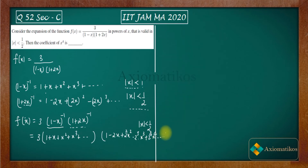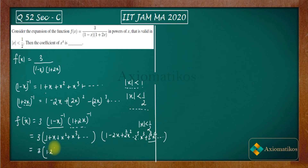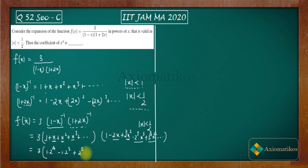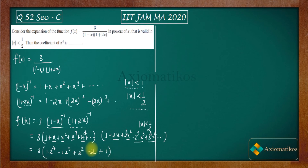We collect all terms whose product gives x⁴. Multiplying 1 × 2⁴x⁴ gives coefficient 2⁴. Multiplying x × (−2³x³) gives coefficient −2³. Multiplying x² × 2²x² gives coefficient +2². Multiplying x³ × (−2x) gives coefficient −2. And multiplying x⁴ × 1 gives coefficient +1. These are all the contributions to x⁴.